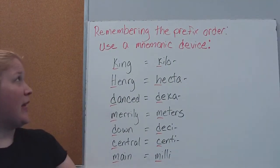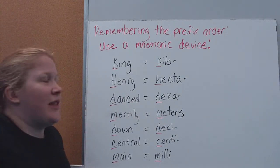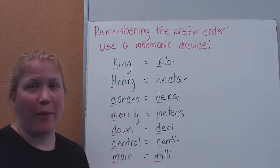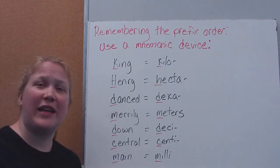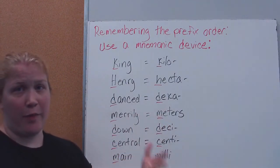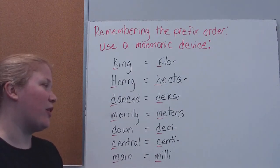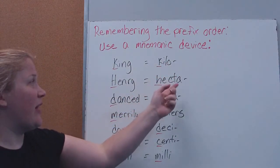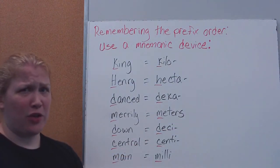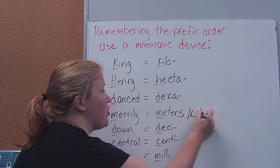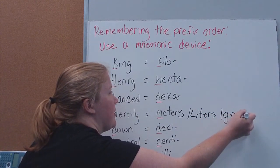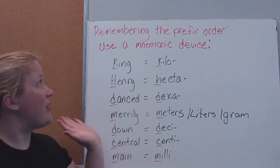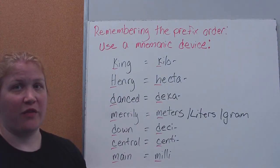To help remember the prefix order, we'll use a mnemonic device — a phrase where the first letter of each word corresponds to a prefix. The mnemonic is: King Henry danced merrily down central me. That gives us kilo, hecto, deca, meters, deci, centi, and milli. Remember that the middle unit can also be grams or liters depending on what we're measuring. The big thing is to remember the order these go in — that will greatly help you when converting.